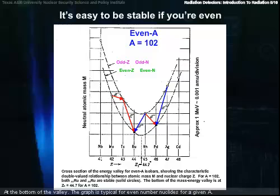The graph is typical of even-numbered nuclides for a given A. There are usually two stable nuclides at the bottom of the valley, in this case ruthenium-102 and palladium-102. You can also see that there are actually two valleys here.